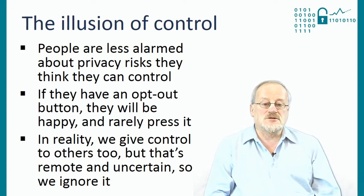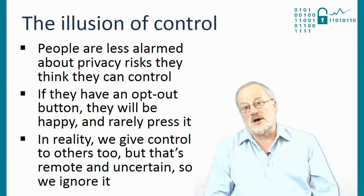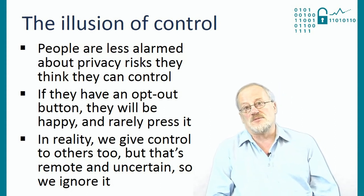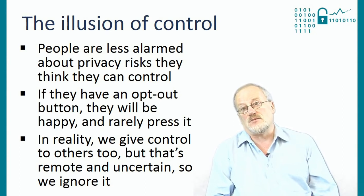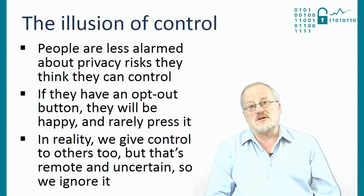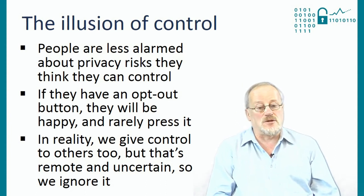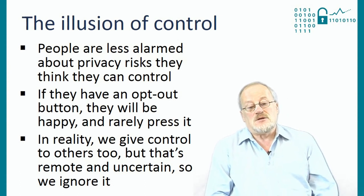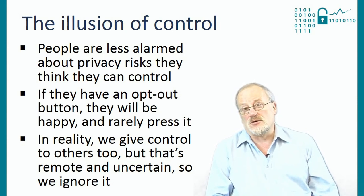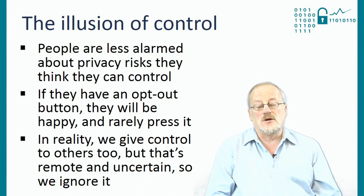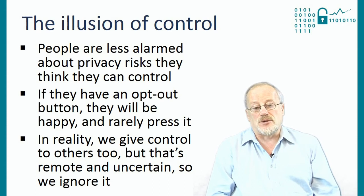The second factor is that people like the illusion of control. Most people are more scared of flying than driving, even though flying is many times safer — the fact that you've got the steering wheel in your hand gives you a feeling of comfort. Exactly the same thing happens with information. If you give people an opt-out button at the bottom of a website, only a small number will press it. Consistently somewhere between 1% and 2% of people in Britain have opted out of secondary use of medical records, despite the fact that your medical records can end up being shared with an awful lot of companies and researchers around the world. When you fail to press the opt-out button, you're exercising what you think is control, not stopping to think that other people acquire some control over your information too, because those people are remote, in the future, uncertain — easy to ignore.